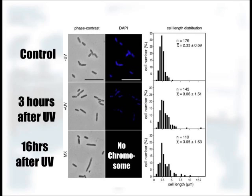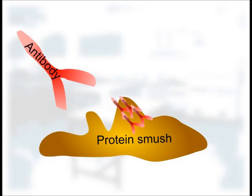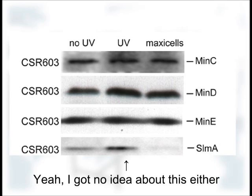So the DNA is gone, but we need to make sure that the MIN system still works. And more importantly, that the SlmA system doesn't. This brings us to figure 2A, which consists of immunoblots. These are formed when you pop open bacterial cells and use an antibody to highlight a specific protein. The more protein there is, the bigger the smudge. No protein, no smudge. As you can see, MinC, MinD, and MinE are all here even after the UV has had its way with the cell. SlmA, the guardian of the chromosome, completely disappears after 16 hours.